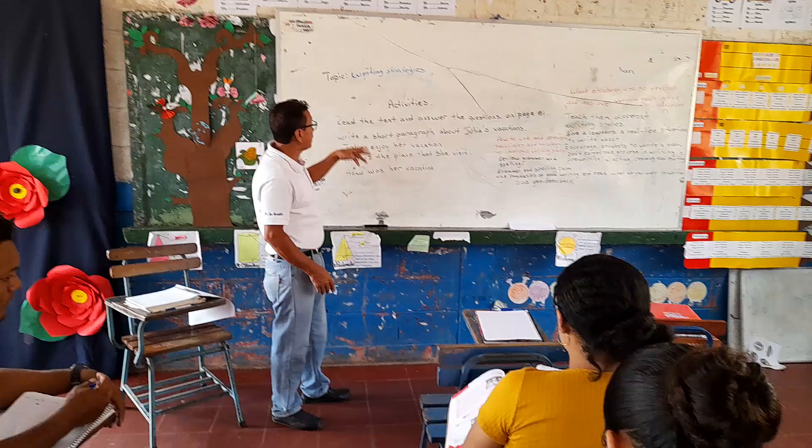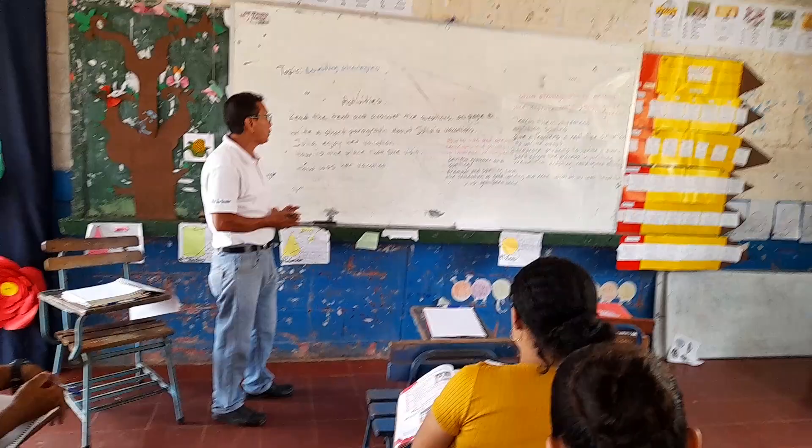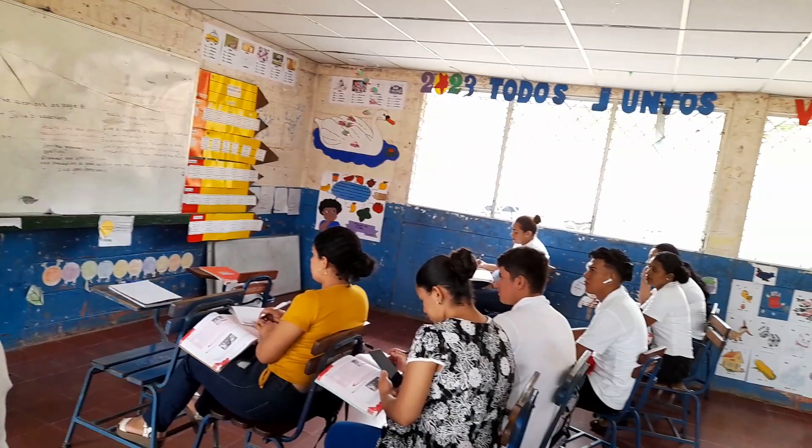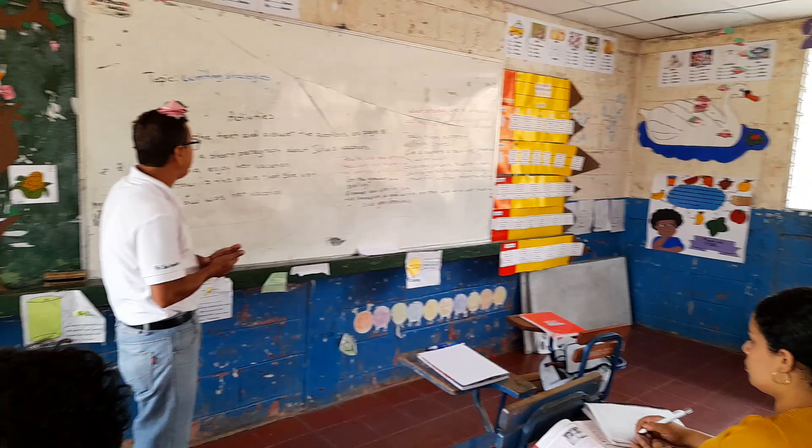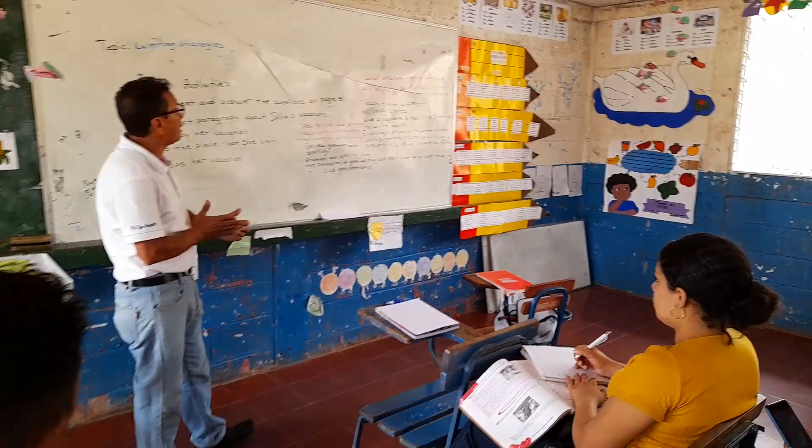You can see my students are working right now because they're reading the text and answering the questions of Beyshele Juan. After that they're going to write a short file about Julia's vacation — Julia enjoying her vacation, how the place she visited was, and how her vacation was.